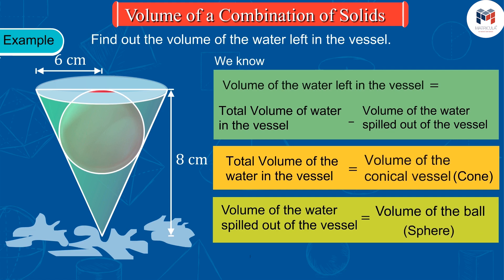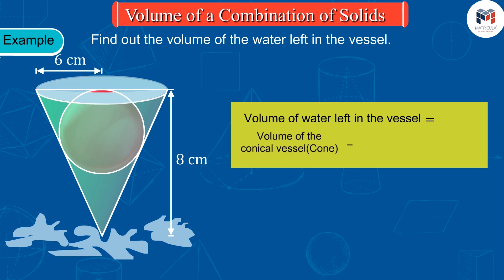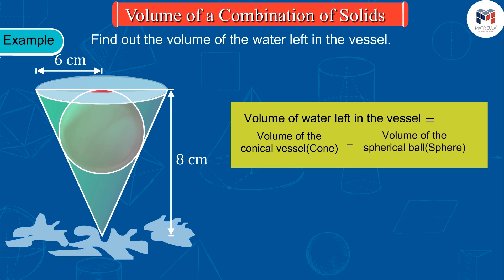Because the ball spills out as much water as the space it occupies. So we can say that the volume of water left in the vessel is equal to the difference of the volume of the conical vessel and that of the spherical ball.